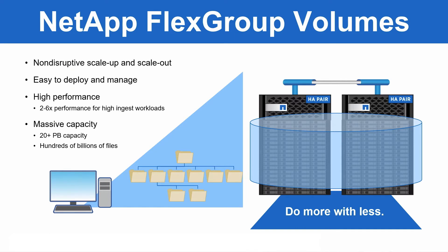The question becomes: what can you do about it? FlexGroup volumes and NetApp ONTAP offer a way to leverage all of the available hardware resources in your cluster to provide up to 20 petabytes of capacity and over 400 billion files in a single namespace. We view the FlexGroup as the future of NAS storage here at NetApp.